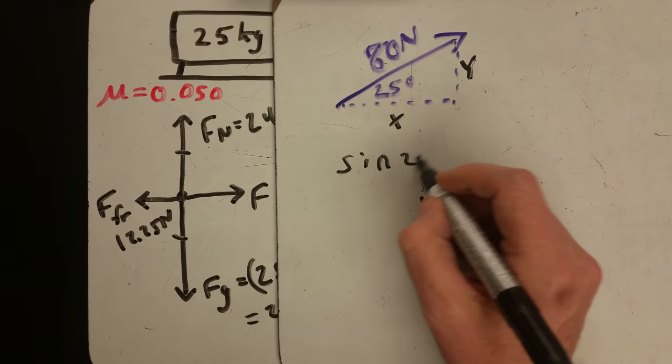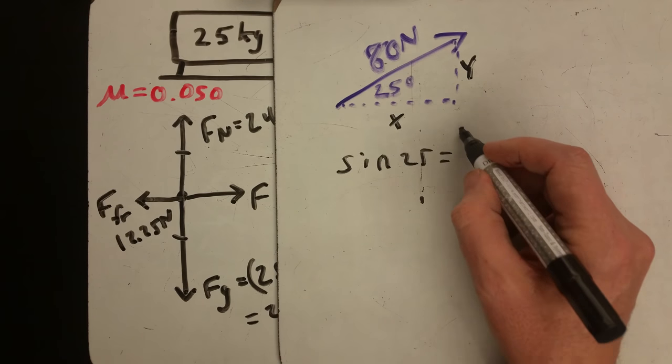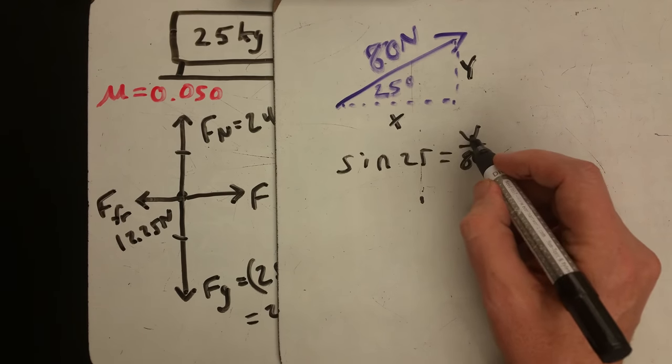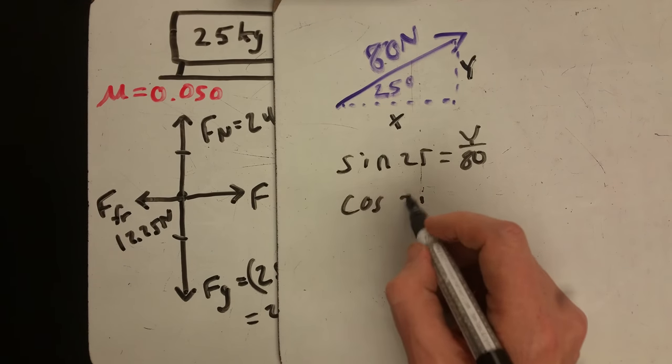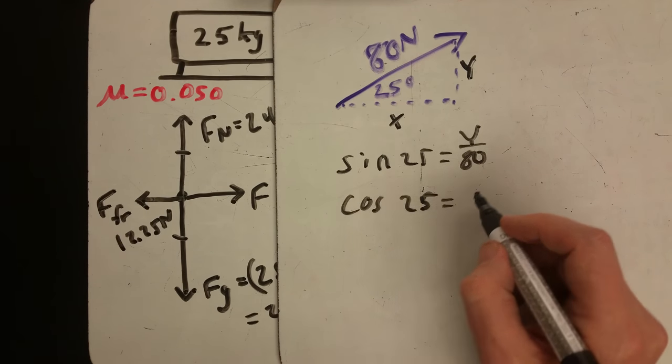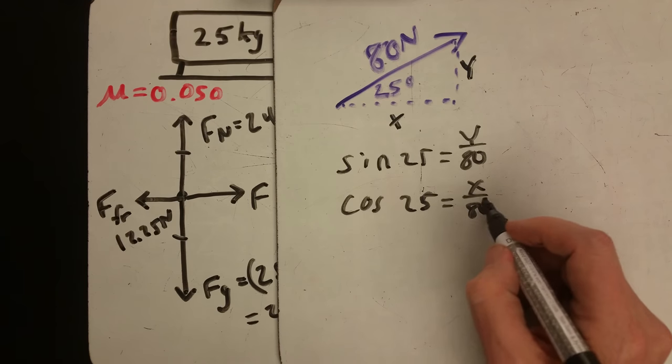So sine of 25 equals y over 80, and cosine of 25 equals x over 80. Do that math, hit pause and come back.